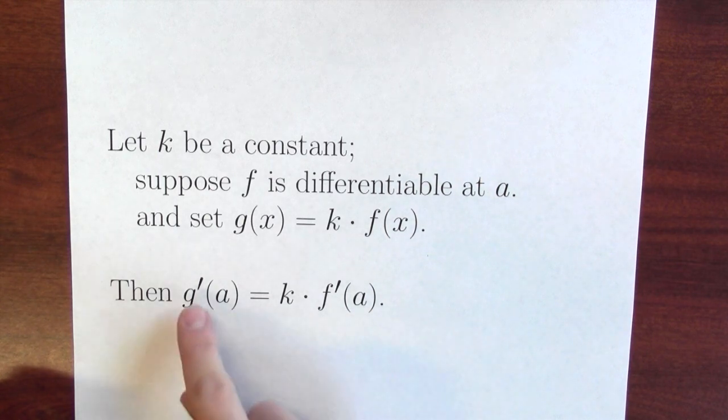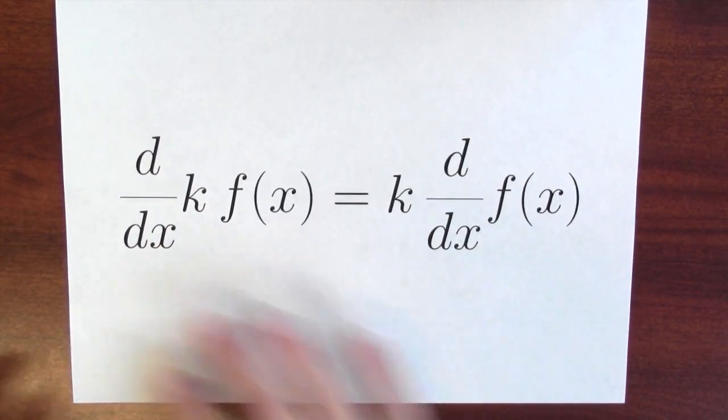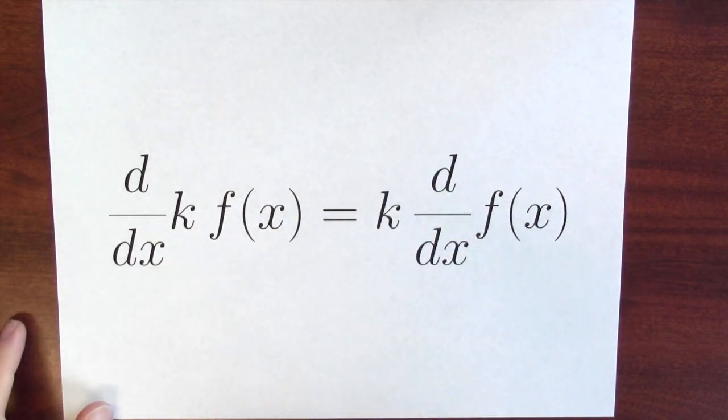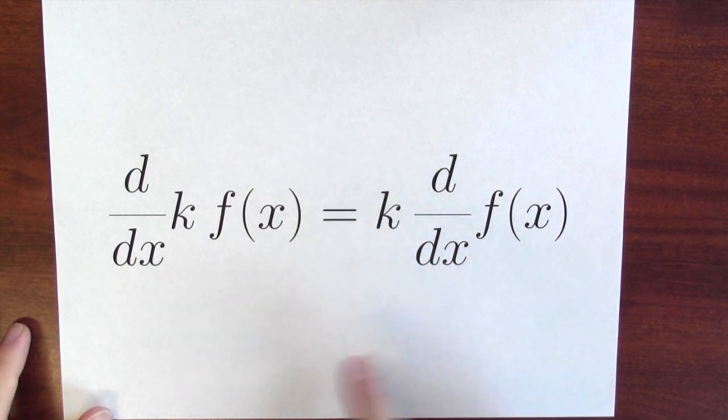Now if you don't like this prime notation you could also write it using the d/dx notation. So here's how I write the constant multiple law using the d/dx notation. The derivative of k times a function is k times the derivative of that function.